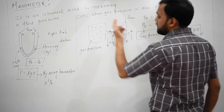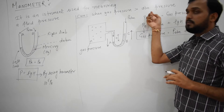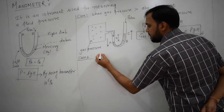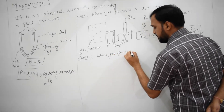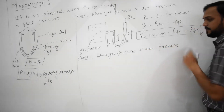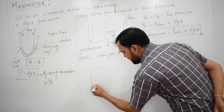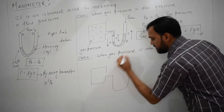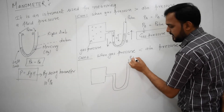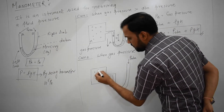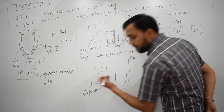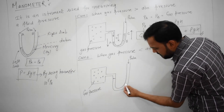In the second case, when the gas pressure is less than atmospheric pressure — what would be the condition? Again, I am taking one container filled with gas, connected to a manometer like this. This part is open to surroundings, so we have atmospheric pressure. Inside we have the gas molecules, and that's why we have a gas pressure. From this side the mercury is rising up, and from here mercury is going down.